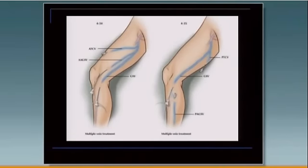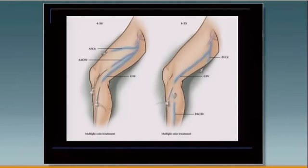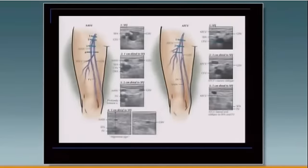As far as the nomenclature that we heard this morning, accessory veins run parallel to the course of the great saphenous, and circumflex veins take on an oblique course. Mapping them with ultrasound and reflux patterns allows you to accurately treat the appropriate source — which was the problem with non-ultrasound guided stripping 20, 30 years ago.